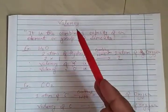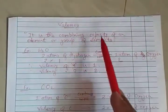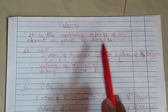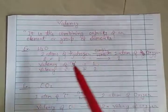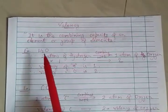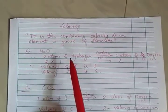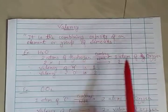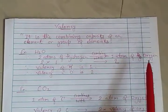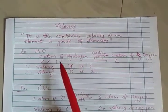Today's topic is valency — the combining capacity of an element or group of elements. In water, H₂O, 2 hydrogen atoms combine with 1 atom of oxygen. We know that the valency of hydrogen is 1.